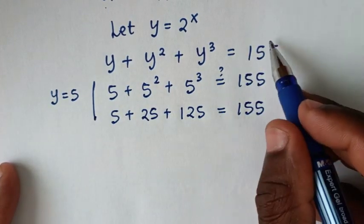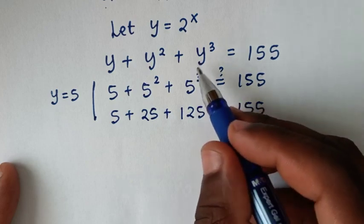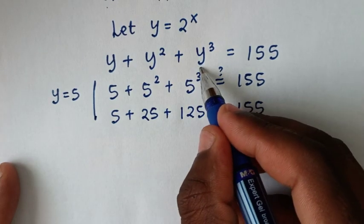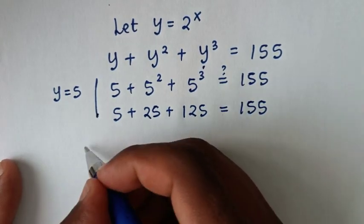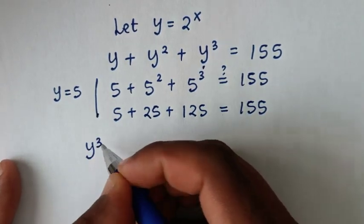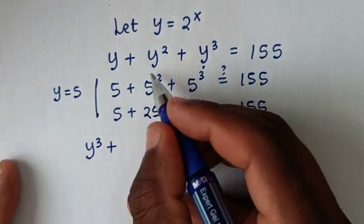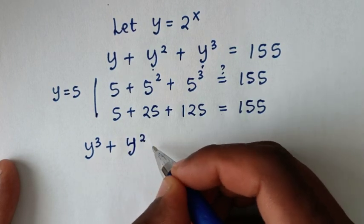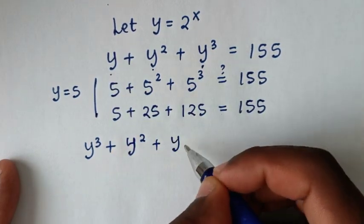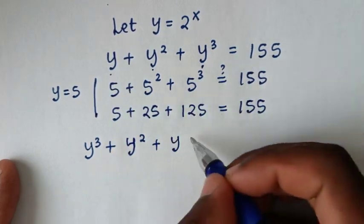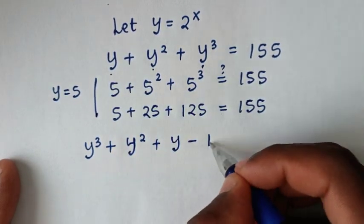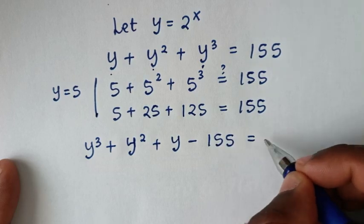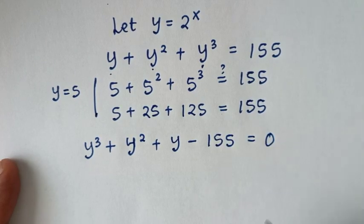Now, let's take everything to the left side. We start with the largest power: y cubed plus y squared plus y minus 155 is equal to 0.